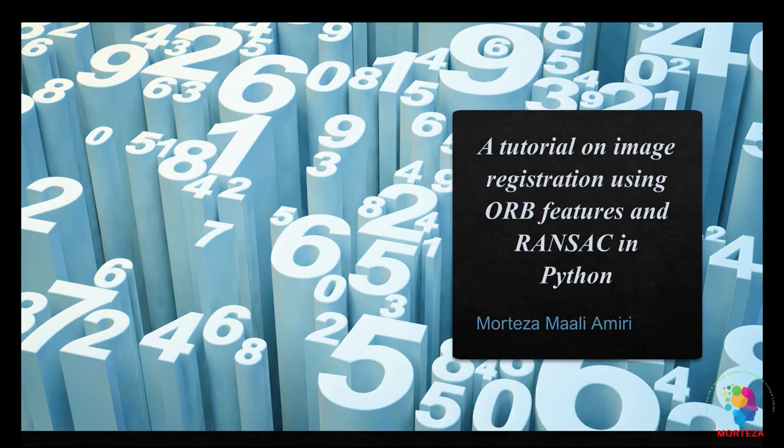As I said, this video is going to be a tutorial on image registration using ORB features and RANSAC in Python. Image registration is the process of overlaying images of similar scenes which have gone through different transformations because of being taken from a few viewpoints or at a few times or by different sensors or the same sensors but different filters.